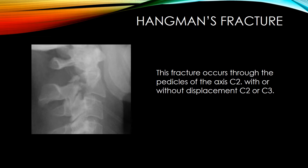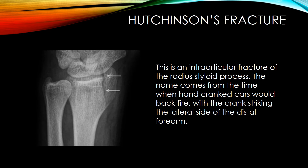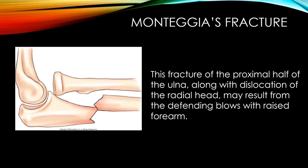Hangman's fracture occurs through the pedicles of the axis C2 with or without displacement of C2 or C3. A Hutchinson's fracture is an intra-articular fracture of the radial styloid process — the name comes from the time when hand-cranked cars would backfire, with the crank striking the lateral side of the distal forearm. A Monteggia fracture is a proximal half ulna fracture along with dislocation of the radial head, and may result from defending blows with a raised forearm.